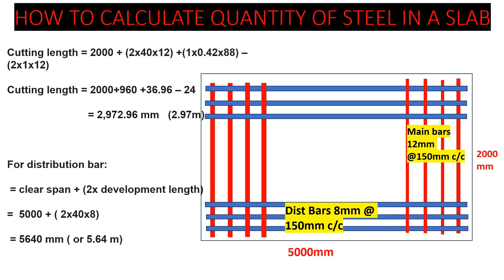Inserting the figures into the formula, the cutting length for the main bar works out to 2972.96 millimeters, approximately 2.97 meters. This is the length we need to cut each main bar so it fits correctly within the slab area including bends and hooks.